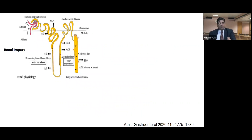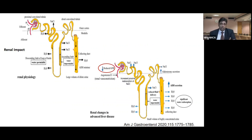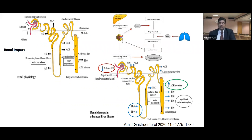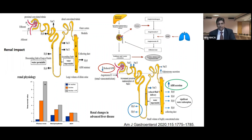Looking at the renal impact: in cirrhosis with ascites, there is progressive reduced GFR. In the descending limb of Henle, there is more and more water absorption as the body perceives a state of hypovolemia. There is increased ADH secretion and significant water absorption, causing dilutional hyponatremia and worsening ascites. Reduced GFR activates the renin-angiotensin-aldosterone system, and many studies have shown that plasma renin, norepinephrine, and ADH levels keep increasing as ascites worsens and renal failure sets in.